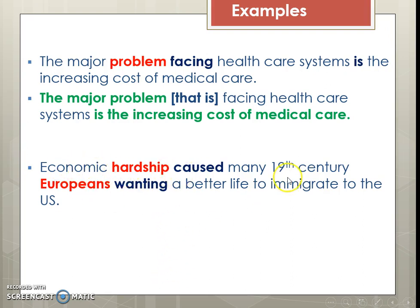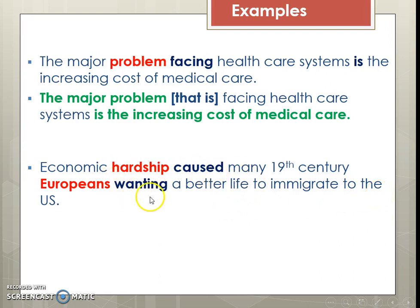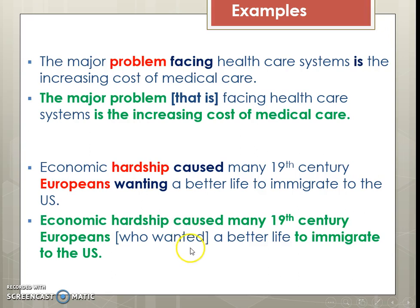'Economic hardship caused many 19th century Europeans wanting a better life to immigrate to the U.S.' The main idea is: 'economic hardship caused many 19th century Europeans to immigrate to the U.S.' So what do we do with the remaining part? We add 'Europeans who wanted a better life' — it tells us something more about those Europeans.